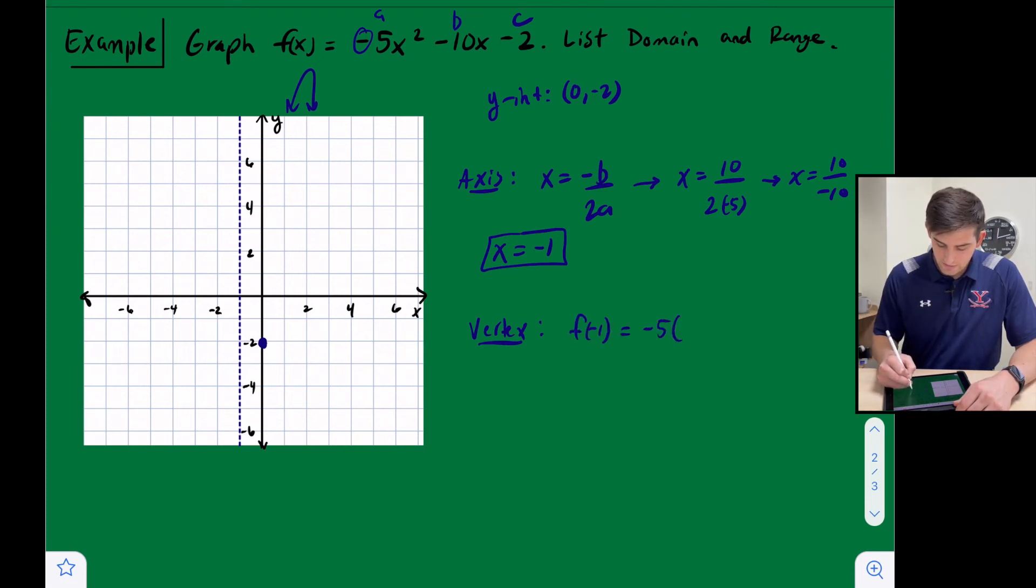And it's equal to negative 5 times negative 1 squared, minus 10 times negative 1, minus 2. So we get negative 5 times 1, basically negative 1 squared is 1 times negative 5. This is going to become plus 10, and then minus 2.